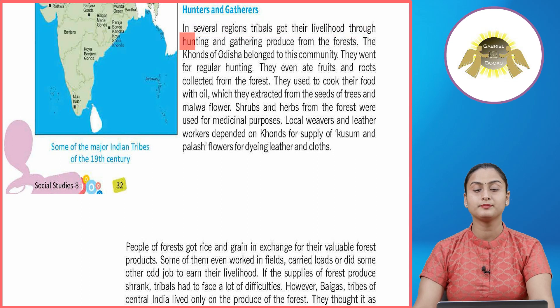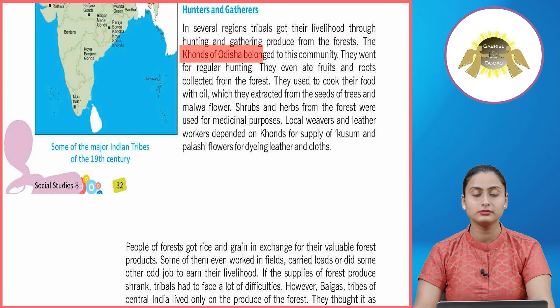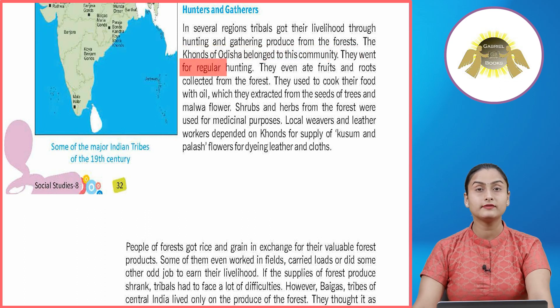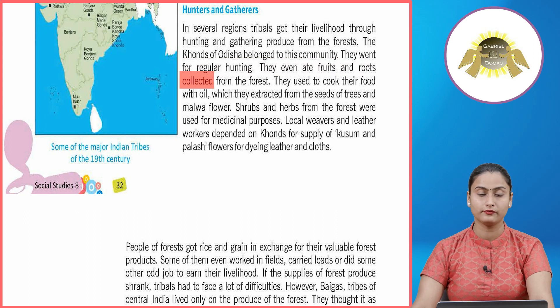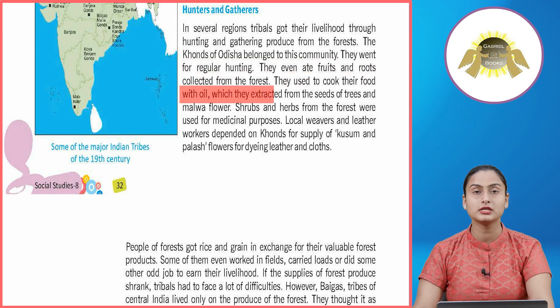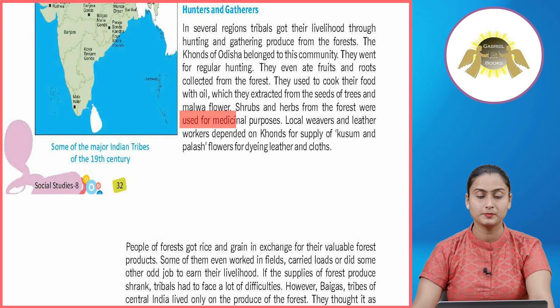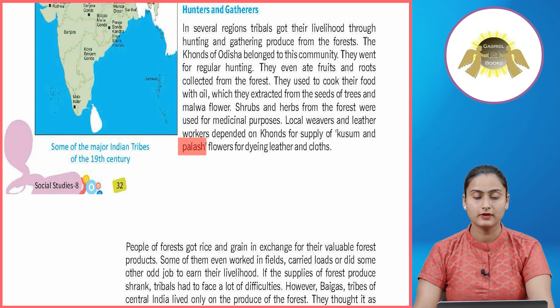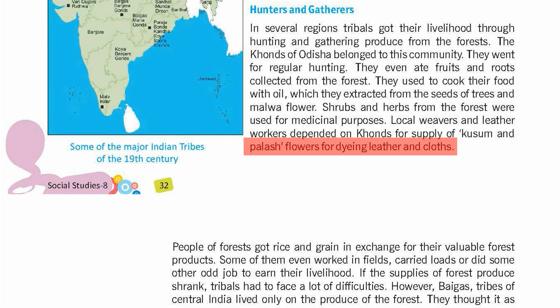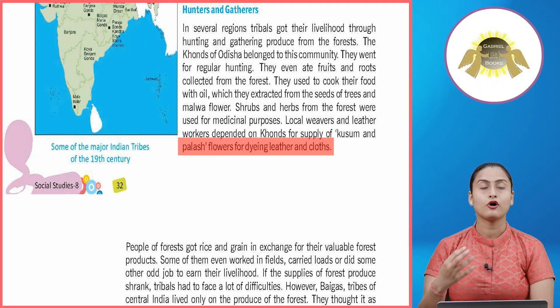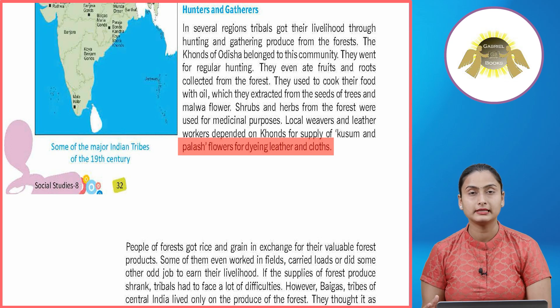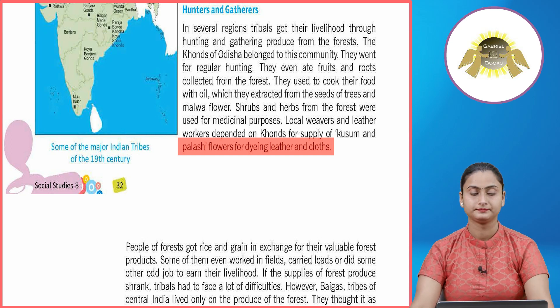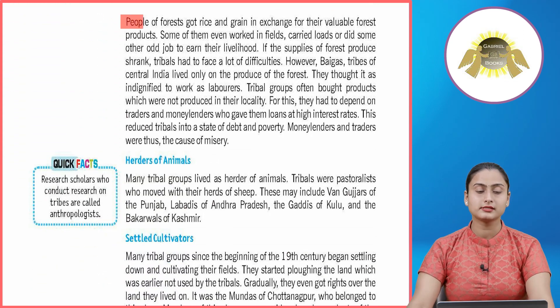Hunters and gatherers: in several regions, tribals got their livelihood through hunting and gathering forest produce. The Khonds of Odisha belonged to this community. They went for regular hunting, ate fruits and roots from the forest, and cooked their food with oil extracted from the seeds of trees and mahua flowers. Shrubs and herbs from the forest were used for medicinal purposes. Local weavers and leather workers depended on the Khonds for supply of kusum and pelash flowers for dyeing leather and cloth.